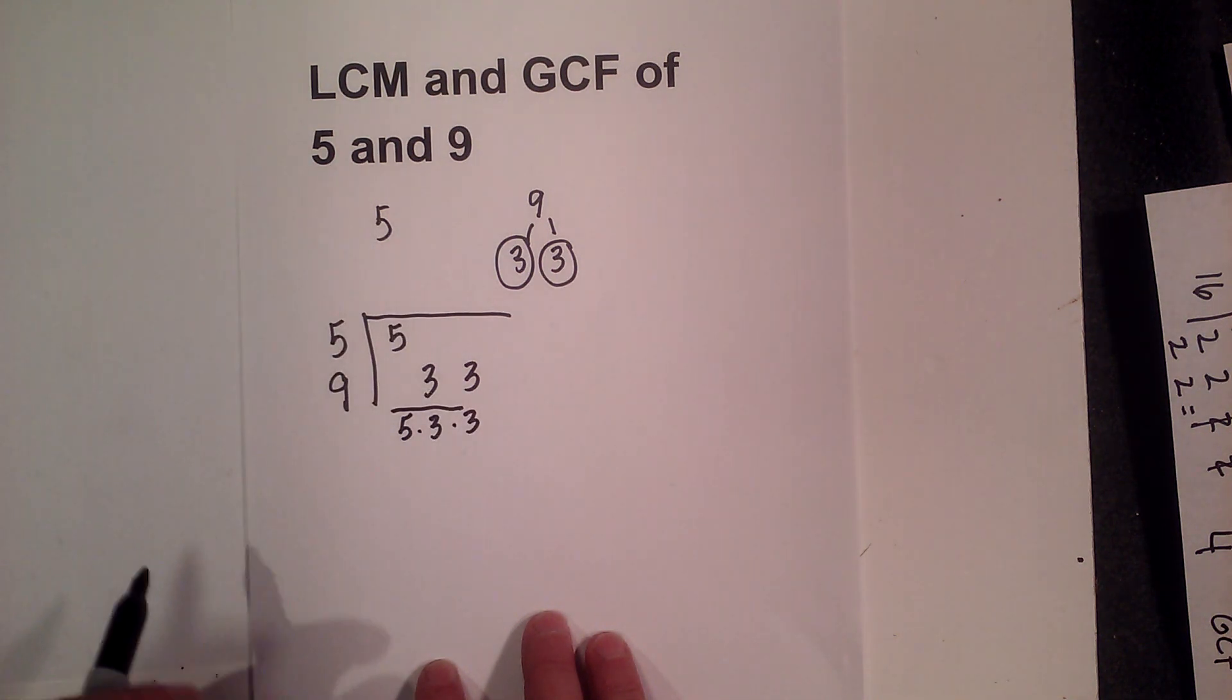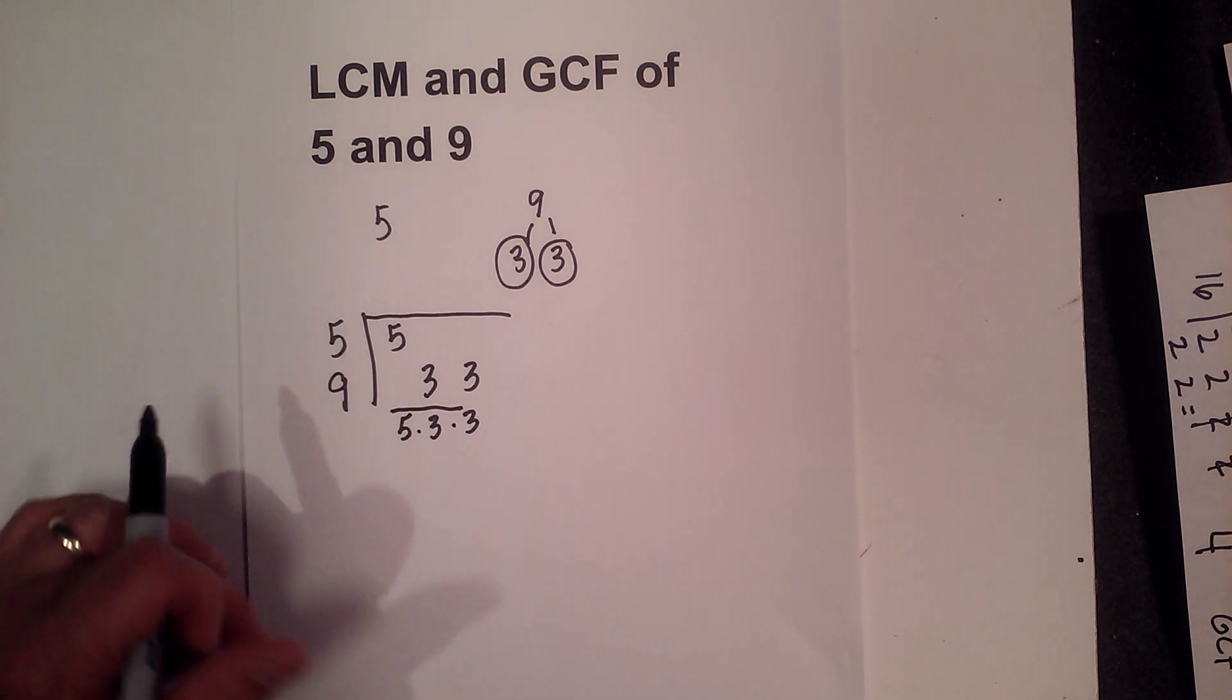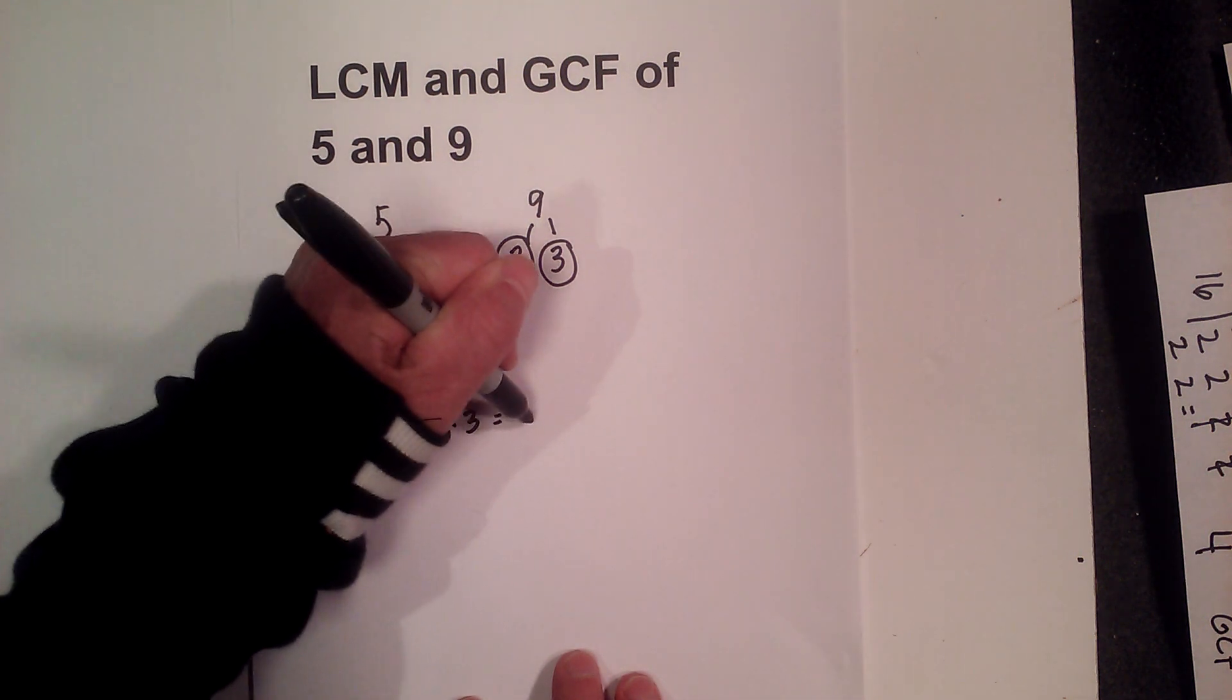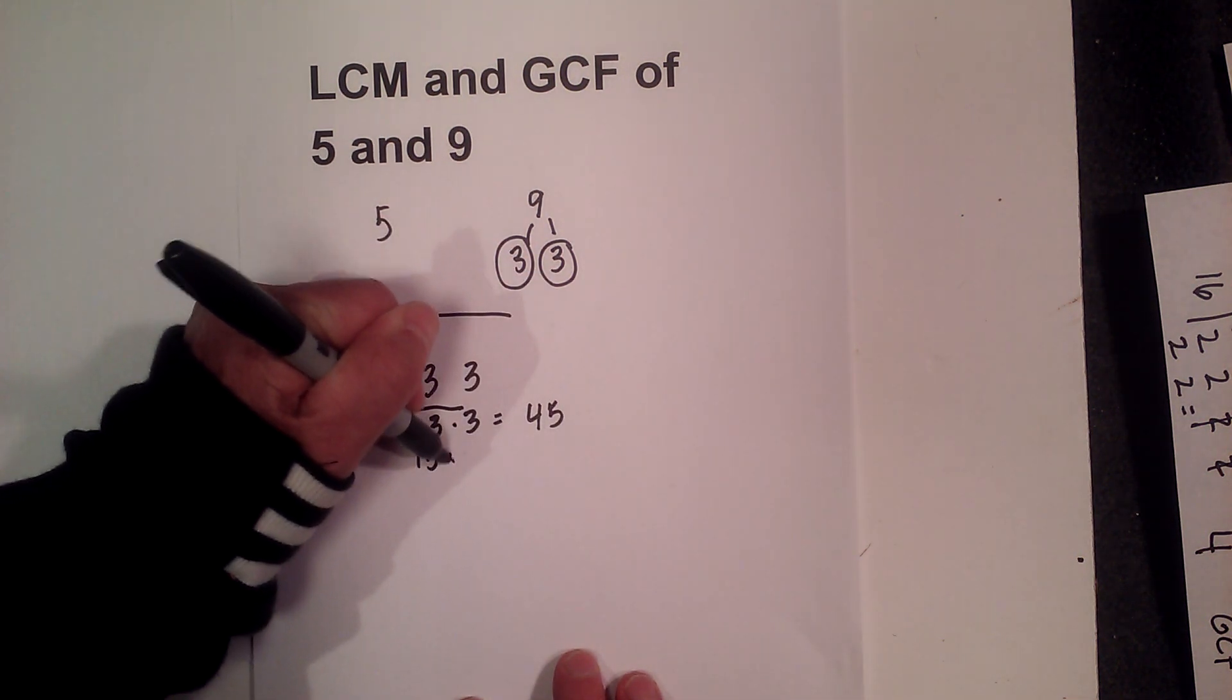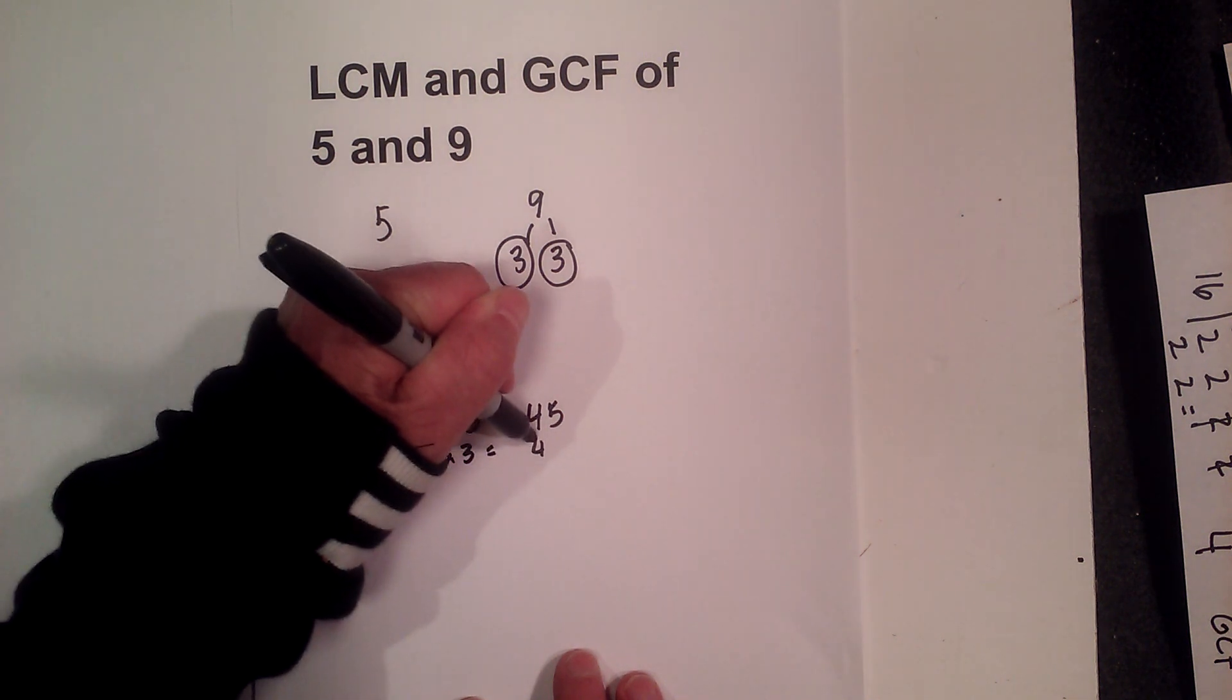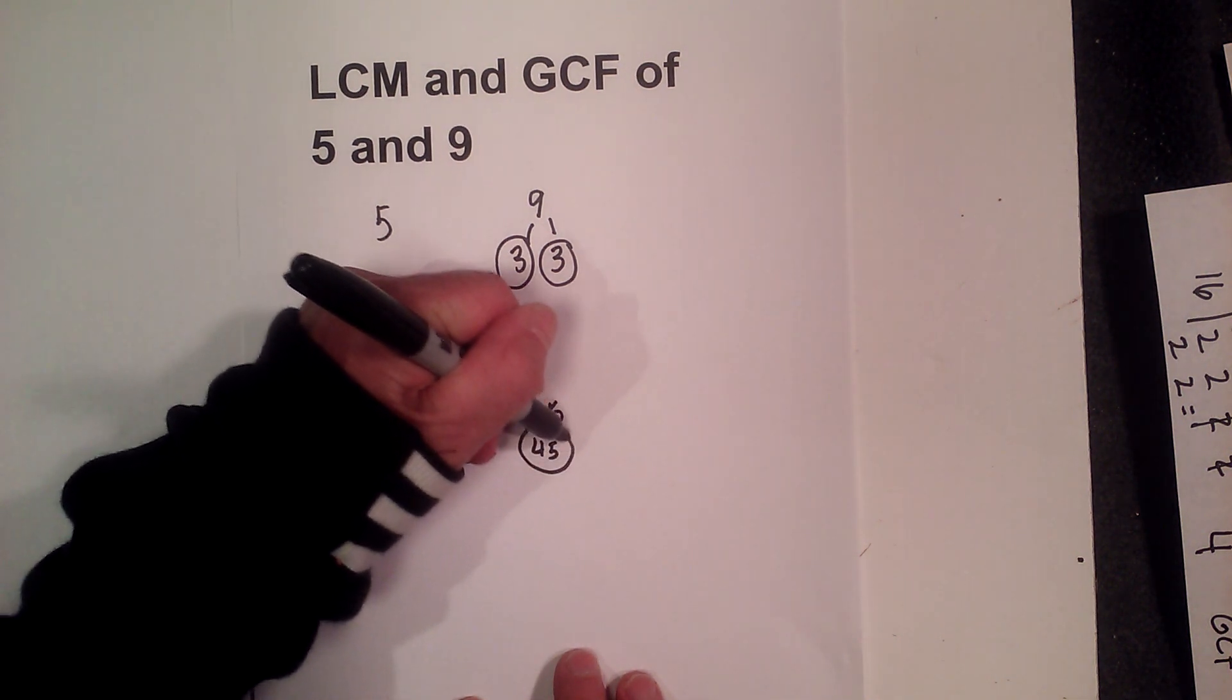And that is 5 times 3 is 15, and then 15 times 3 is 45. And I'll write this out, 5 times 3 is 15, 15 times 3 equals 45. Now that's the LCM.